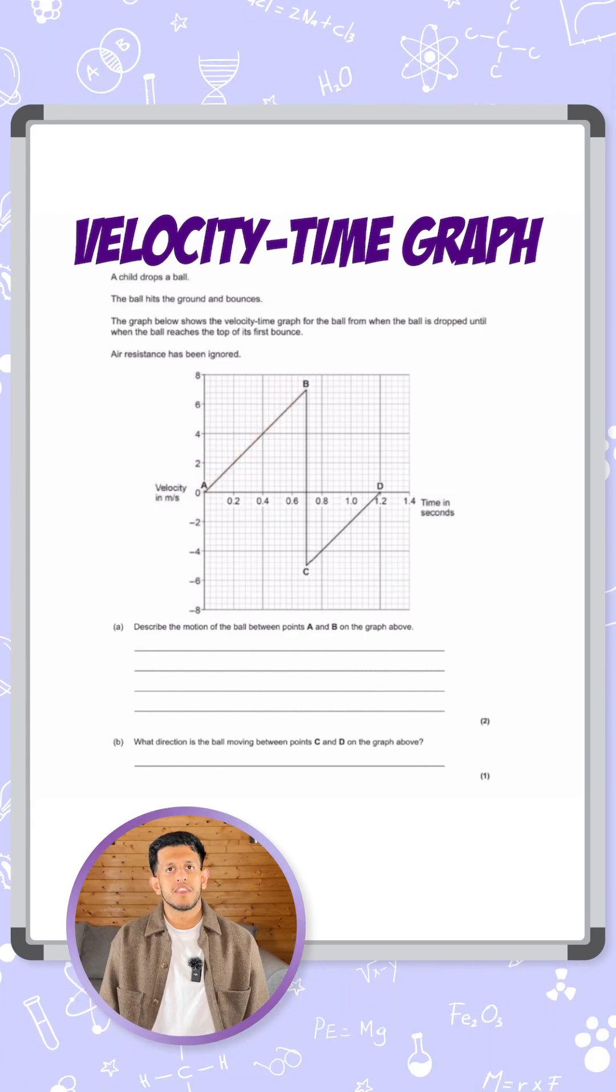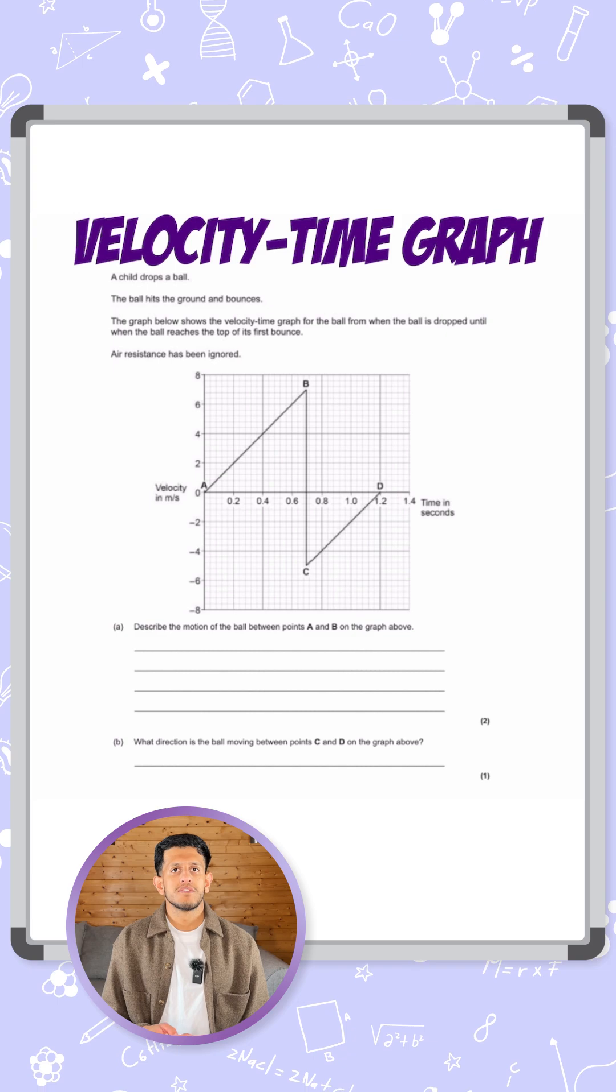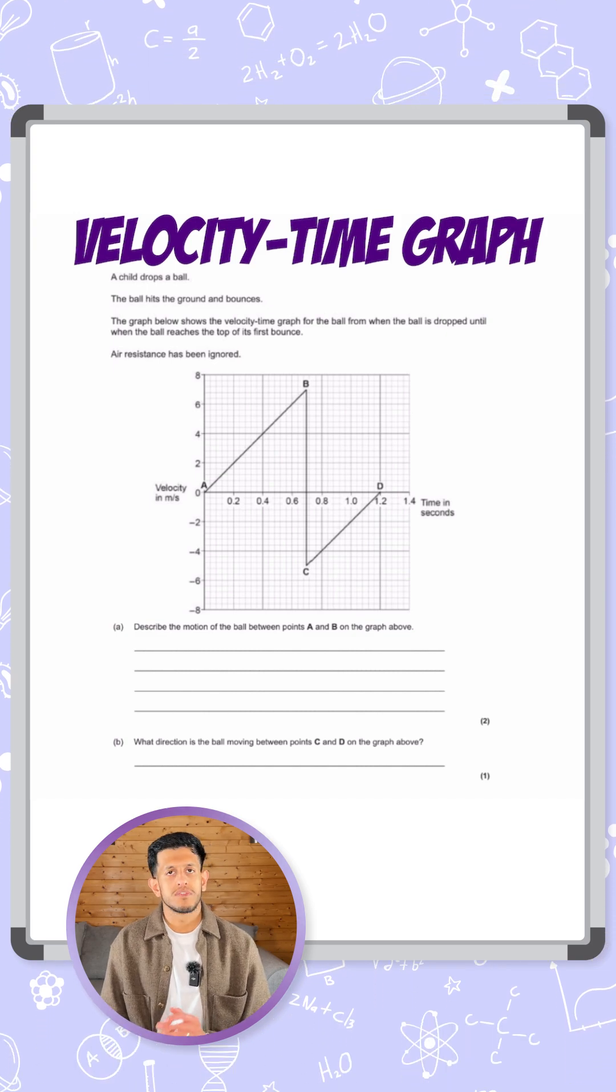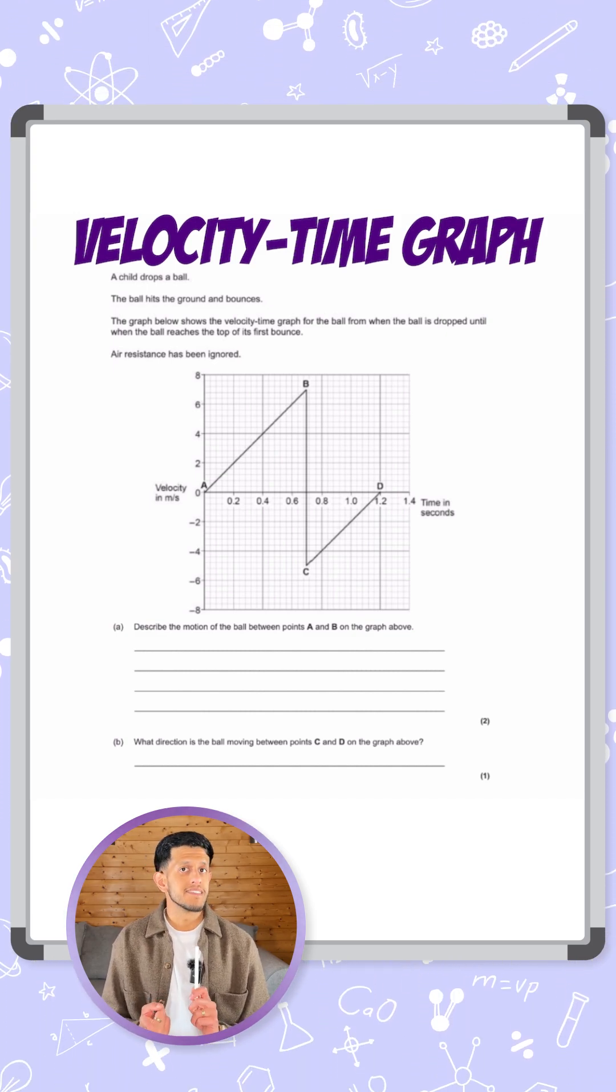The fact that it's a straight line - this is a velocity-time graph - so the gradient on the velocity-time graph tells you the acceleration. For two marks, the first mark will be that it's accelerating.